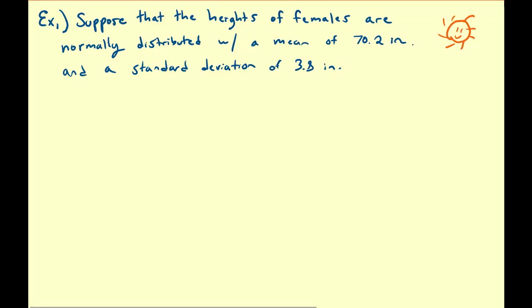Hello there. In the last video, we talked about the difference between the normal and standard normal distributions. In this video, we're going to talk about how to apply these to real-world contexts. So let us first assume that the heights of females are normally distributed with a mean of 70.2 inches and a standard deviation of 3.8 inches. How would we find probabilities associated with the heights of females?